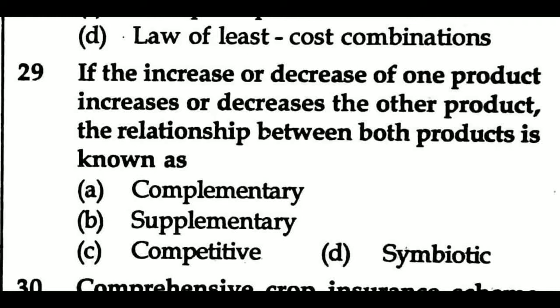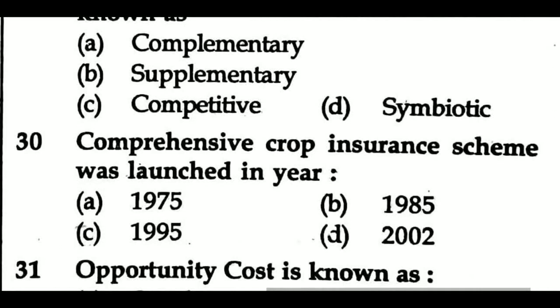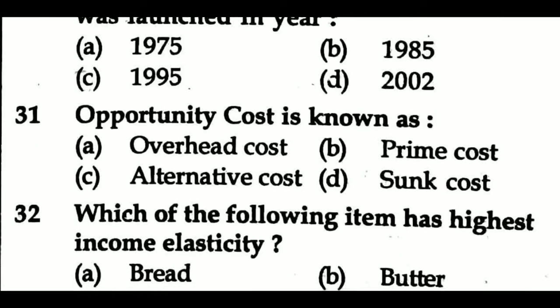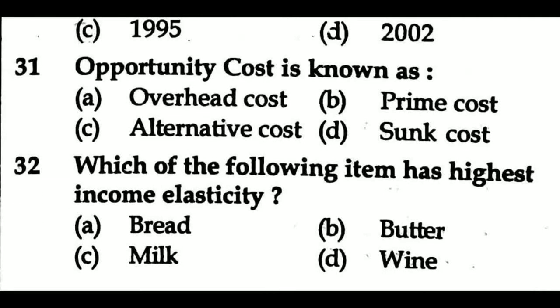Question 30: Comprehensive crop insurance scheme was launched in year — Option A: 1975, Option B: 1985, Option C: 1995, Option D: 2002. Question 31: Opportunity cost is known as — Option A: overhead cost, Option B: prime cost, Option C: alternative cost, Option D: sunk cost. Question 32: Which of the following item has highest income elasticity? Option A: bread, Option B: butter, Option C: milk, Option D: wine.